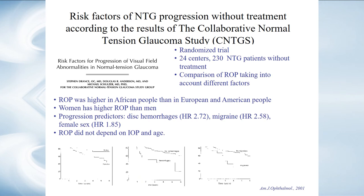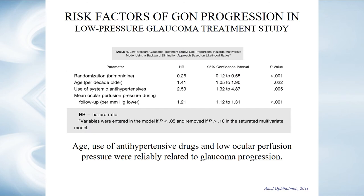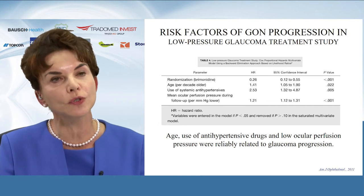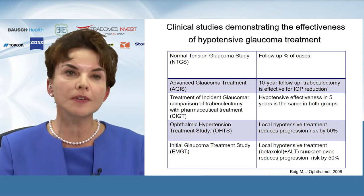It was demonstrated that different glaucomas progress at different paces. Normal tension glaucoma progresses threefold slower than pseudo-exfoliative glaucoma. The normal tension glaucoma trial had a control group without treatment, and for the first time it was demonstrated that the rate of progression is not associated with IOP. Other risk factors were identified: Afro-American ethnic group — glaucoma progressed much faster than in Asian and European patients — hemorrhages, migraine, and female gender. Progression was associated with perfusion pressure rather than IOP, and for the first time it was demonstrated that treatment of glaucoma is associated with the use of antihypertensive drugs in patients with low perfusion pressure.